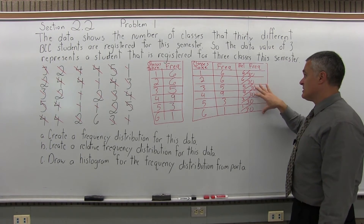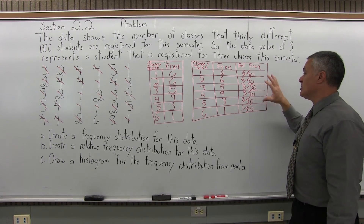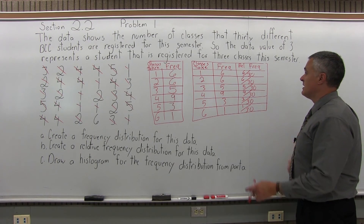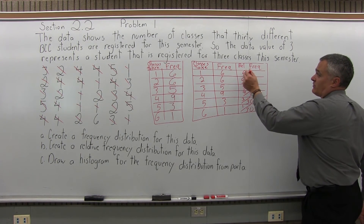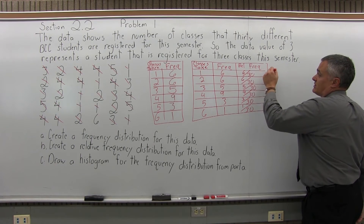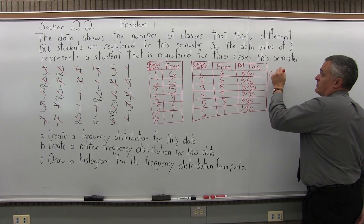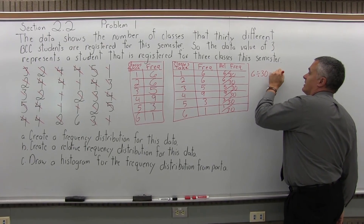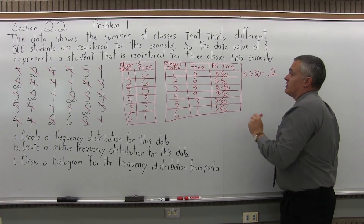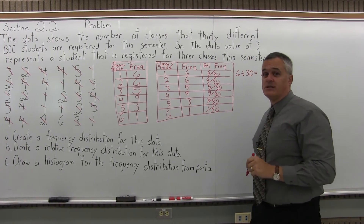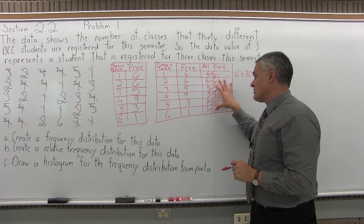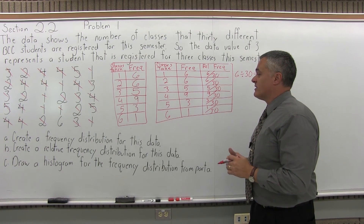Notice some of these can reduce — you can certainly reduce them if you want to. You could also turn any of them into decimals. For example, 6 over 30 with your calculator: 6 divided by 30 equals 0.2. So you could put that in instead of the fractions. But the fractions are okay. Those are the relative frequencies.